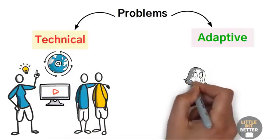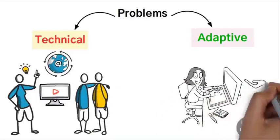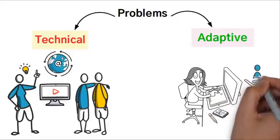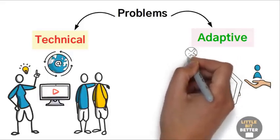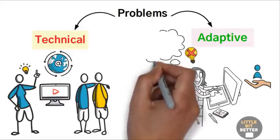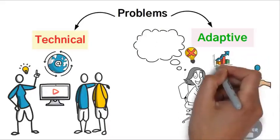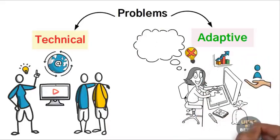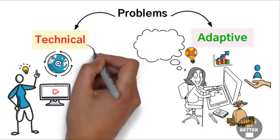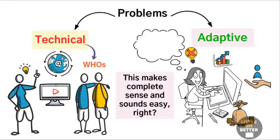Now let's talk about the adaptive problems. These are the problems for creators. Anything that has ever been created or invented has been done by a creator. You can't hire someone to generate ideas that only you can think of. No one can have access to your brain on your behalf. So to grow your business and acquire freedom of money, you need to engage in tasks that only you can do, and leave all the technical problems to the respective who's. This makes complete sense and sounds easy, right?